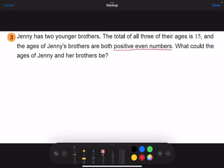This is important information. We need to use this. And remember, it's two younger brothers, not two older brothers. So let's have a look. What could the age of Jenny and her brothers be?